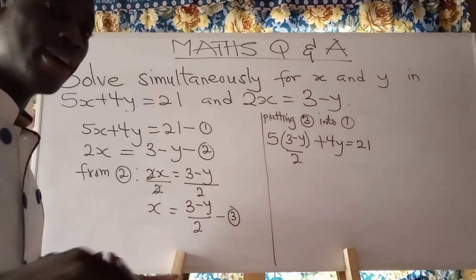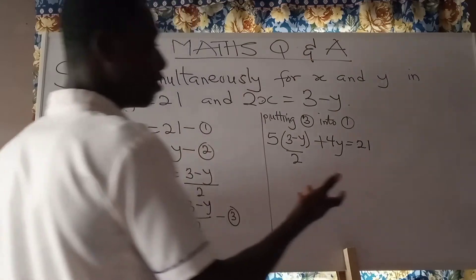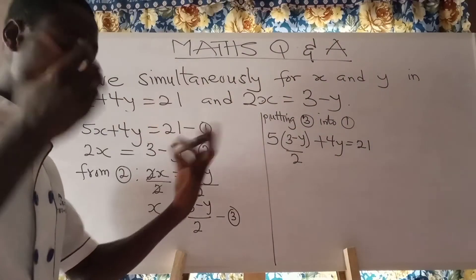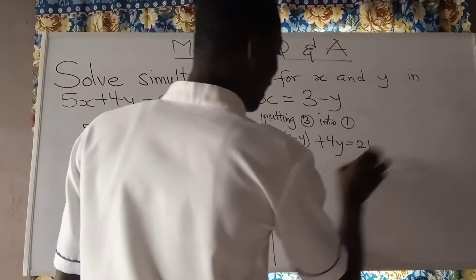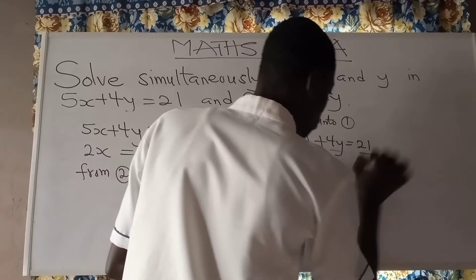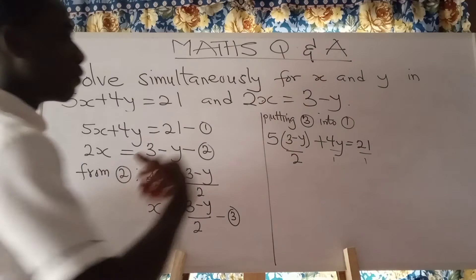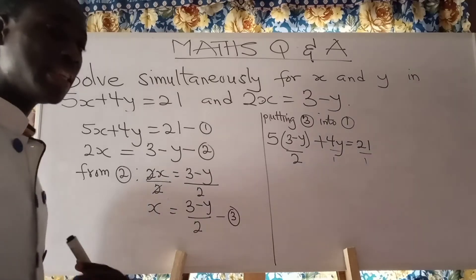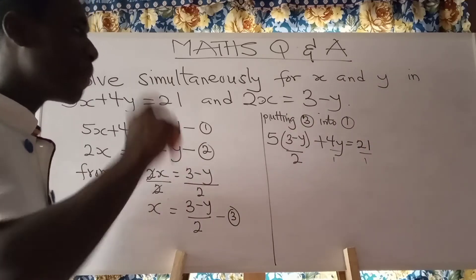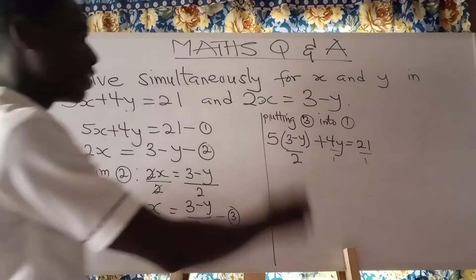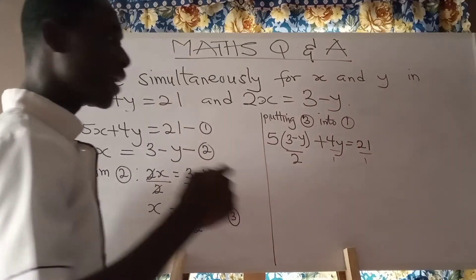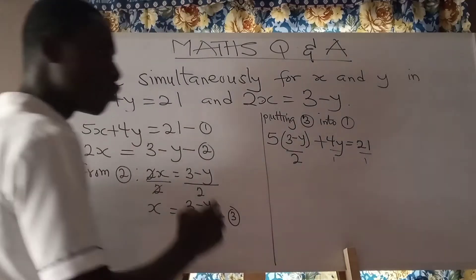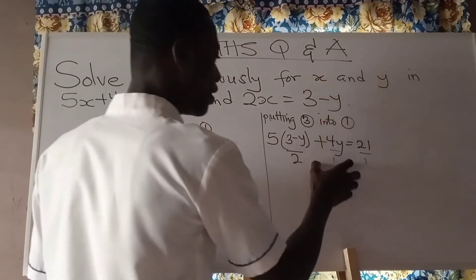To take off the denominator, we find the LCM of the equation. Since the denominators are 2, 1, and 1, the lowest common multiple is 2. After getting the LCM, you multiply it by each term in the equation. So we multiply 2 by each term: 2 times 5(3 minus y) over 2, plus 2 times 4y, equal to 2 times 21.